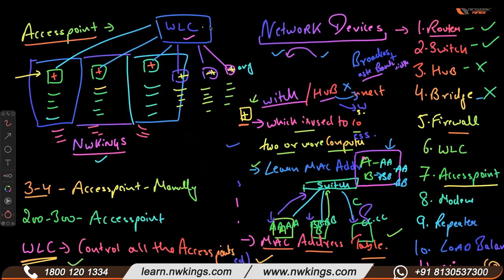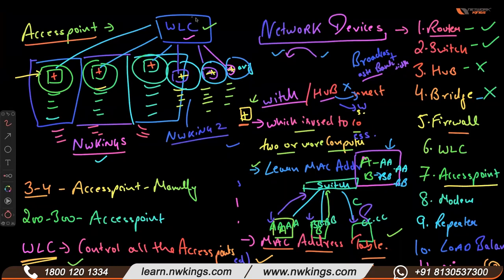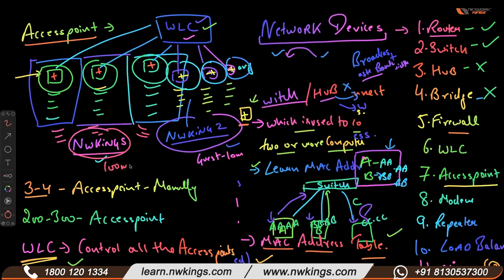WLC is a device which controls all access points. If you have multiple SSIDs — suppose you want two Wi-Fi names in your office — NW Kings and NW Kings 2 — you can also control both by WLC. You can give NW Kings 2 to guests with 10 Mbps speed, and give NW Kings to all your employees with 100 Mbps speed.